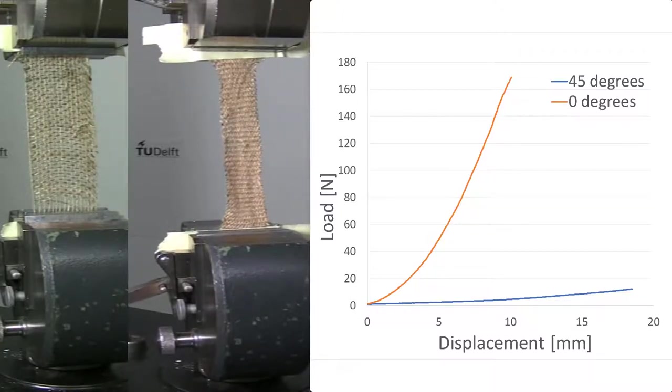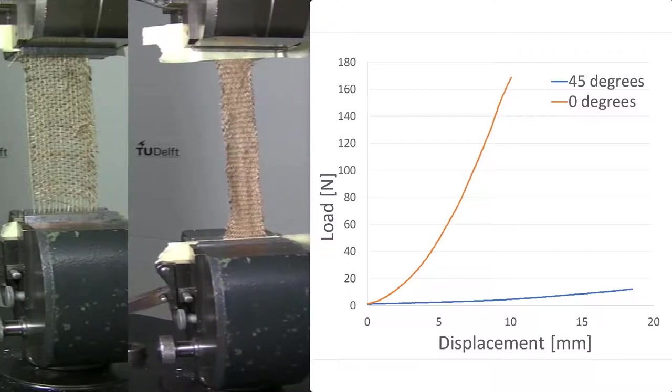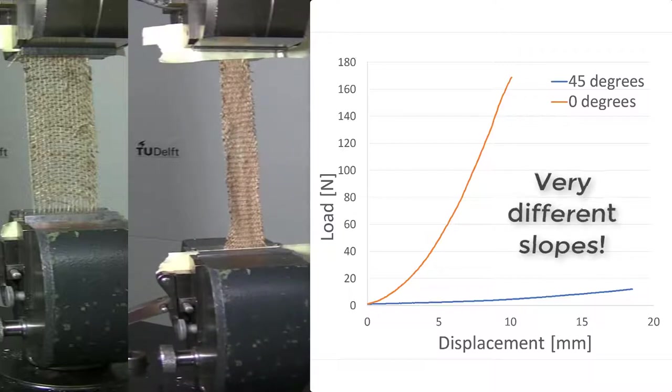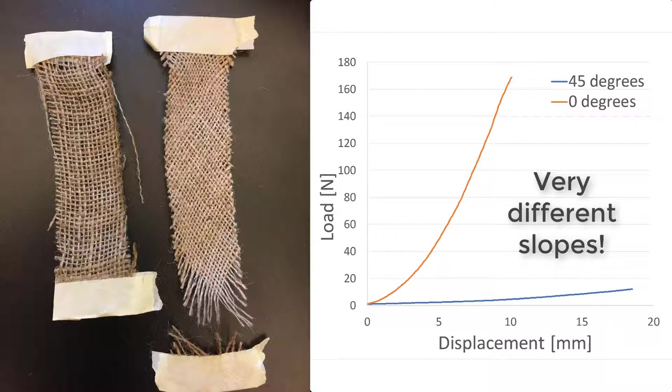We can see that the deformation behavior of the 45-degree specimen is very different than the 0-degree specimen. We can see this both by the footage and by the slope of the force deflection curves. The material appears to be much more stiff in the 0-degree direction than in the 45-degree direction. The material properties are clearly different in different directions.